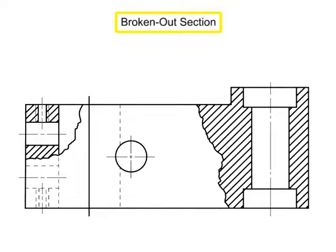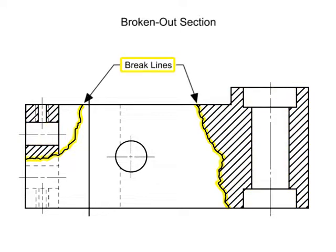Broken out sections are used to show the interior details of a specific feature of the object. A small portion of the part is sectioned to show interior details. A freehand brake line is used in lieu of a cutting plane line to indicate a broken out section.